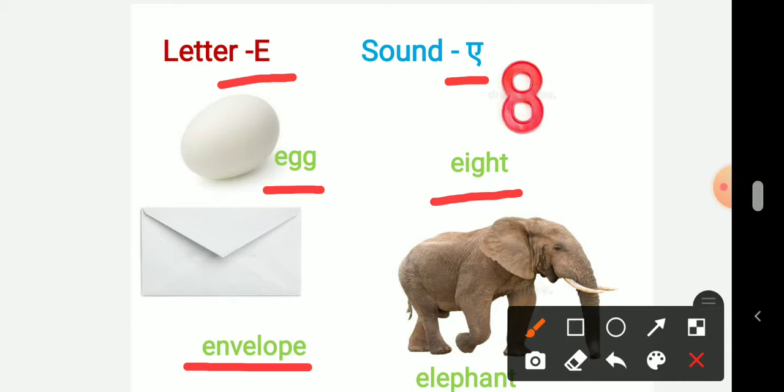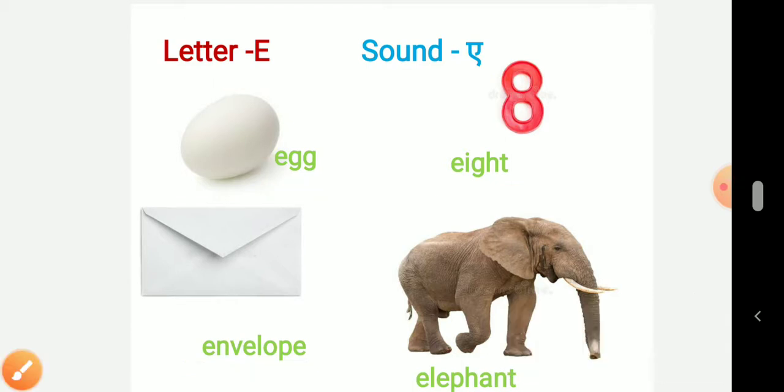And the last picture is elephant. So E-L-E-P-H-A-N-T, elephant. So here the starting sound is A. Egg, eight, envelope, elephant.